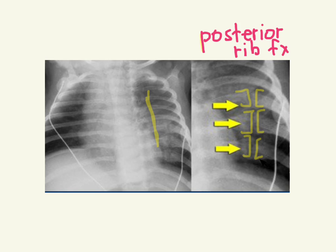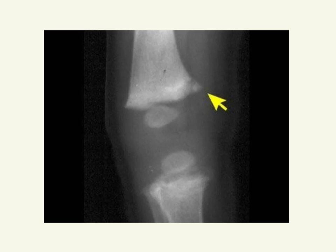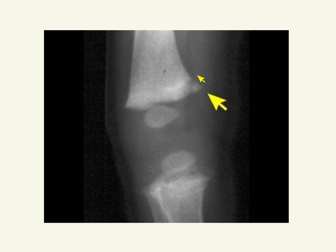Here's that corner fracture we were talking about. These were originally described by a physician who noticed these fractures in kids with subdural hematomas, which we know is another indicator for child abuse. These are again very subtle and easy to miss unless you know what you're looking for. When you order your skeletal surveys, make sure to look for the corner fracture.